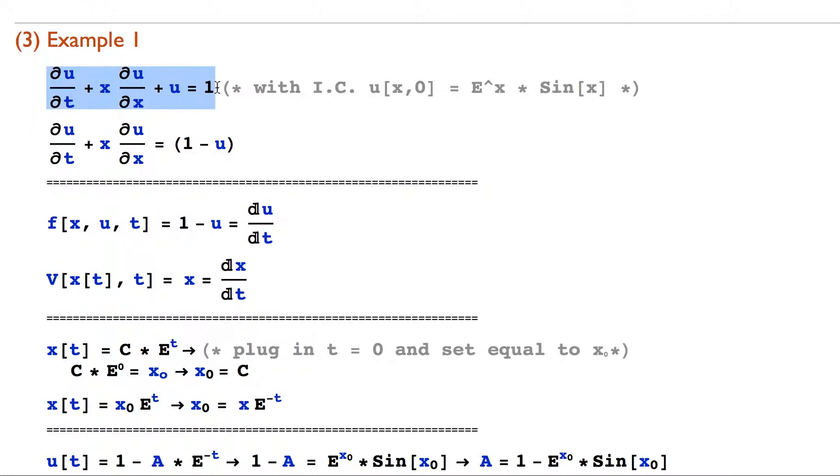Okay, so the example I'm going to do today is this problem, which is at first a little bit intimidating, but the same general approach, method of characteristics, can be used to solve this whole thing. So the first thing to do is to rearrange the problem into the form that we had before, which is we have some sort of time derivative plus a function times the position derivative equaling some other function.